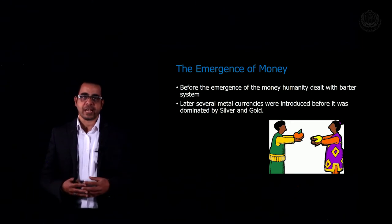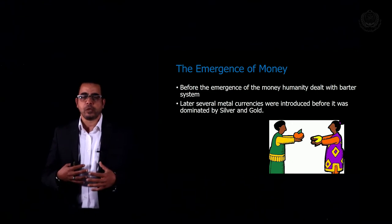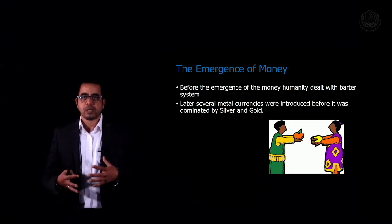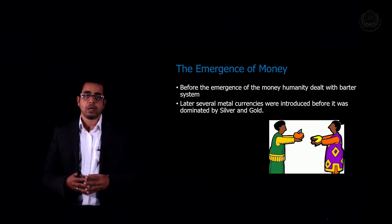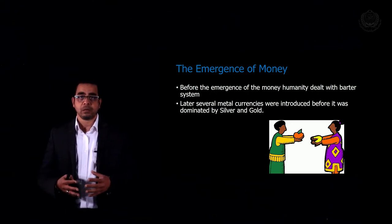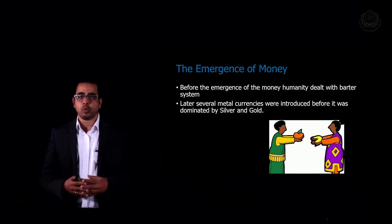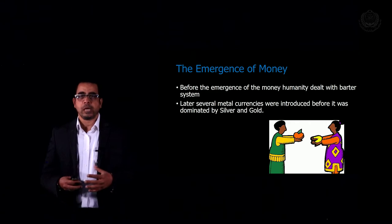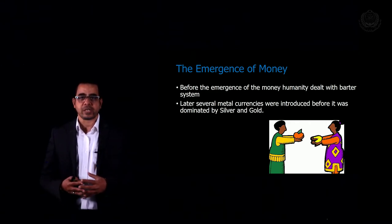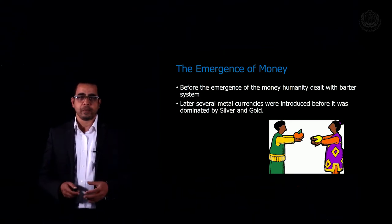There were many trials to use different types of goods as money, like cattle and metals such as bronze. However, it ended up with gold. Gold was what humanity used as a medium of transaction for a long time.